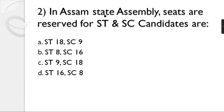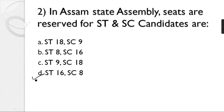Question number 2: In the Assam State Assembly, how many seats are reserved for ST and SC candidates? Options: ST 18, SC 9; ST 8, SC 16; ST 9, SC 18; ST 16, SC 8. The correct answer is option D — ST 16, SC 8.